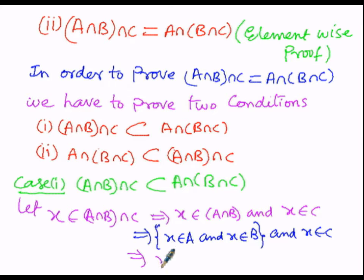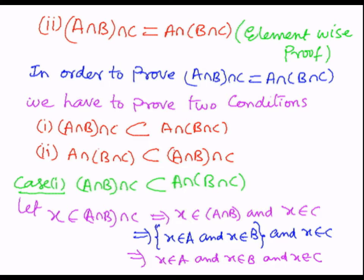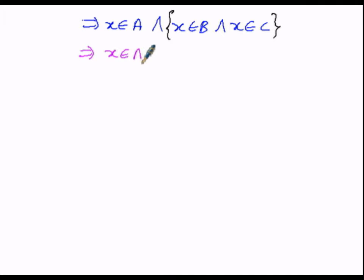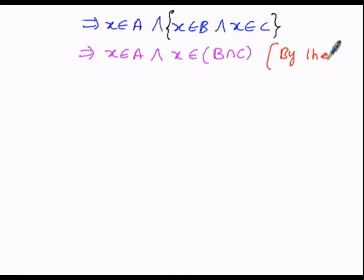Removing the brackets, that implies x belongs to A and x belongs to B and x belongs to C — written symbolically with the inverted V (∧) notation. Now I want to group the second and third elements within brackets. So within the brackets, x belongs to B and x belongs to C can be written, by the definition of intersection of two sets, as x belongs to B intersection C.